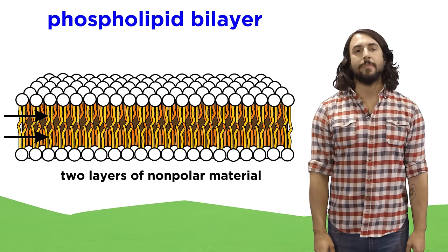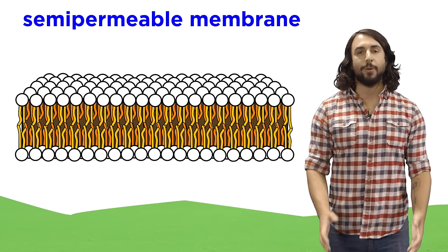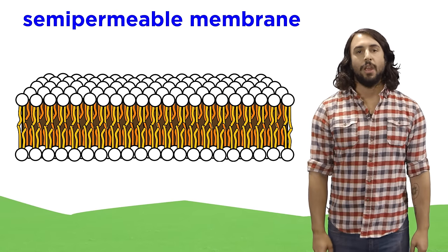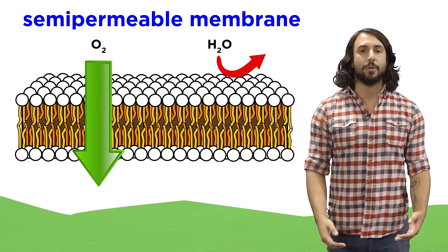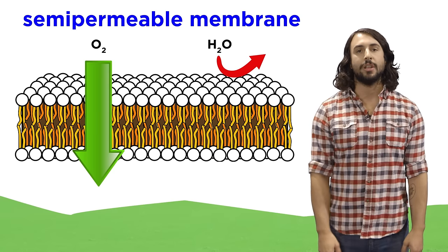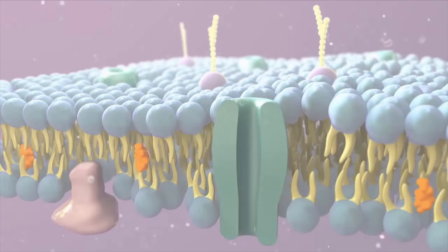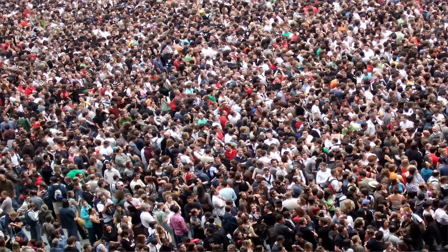This is part of what makes this membrane semi-permeable. Some compounds are able to traverse this nonpolar section and others are not. We refer to this bilayer as a fluid mosaic because these phospholipids are not fixed in their location with respect to one another — they are swimming around and constantly changing places, like concert-goers navigating through a crowd.